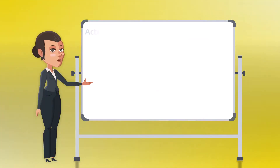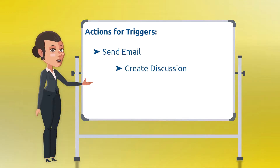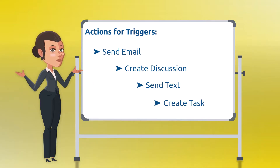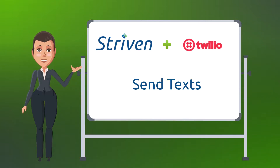For each of the triggers there are four actions available for selection. These options include send email, create discussion, send text, or create task. Please note that Striven's Twilio integration will need to be active in order for the send text action to be accessed and selected.